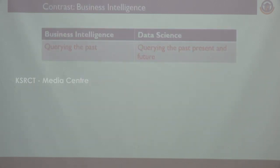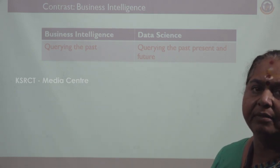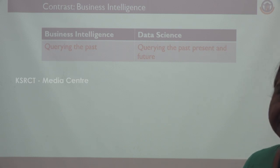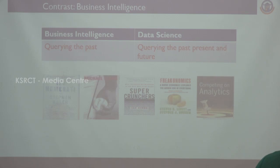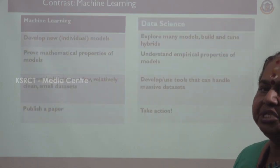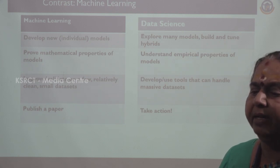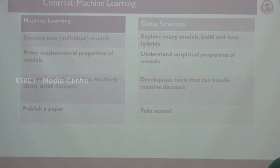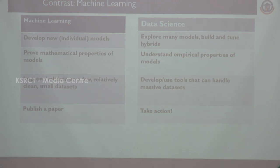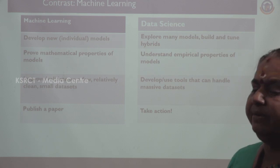There is a difference between business intelligence and data science: business intelligence scores the past, while data science scores the past, present, and also the future. There is also a difference between machine learning and data science: machine learning is used to develop new individual models, while data science explores many models built using time hybrids. Machine learning proves mathematical properties of models, while data science understands the empirical properties of models. Machine learning improves and validates on a few relatively clean small datasets, while data science develops tools that can handle massive datasets. Using machine learning we can publish papers in reputed journals; using data science we can take action for the future.